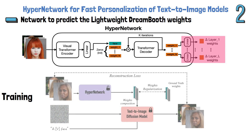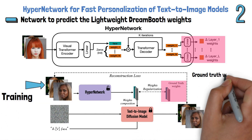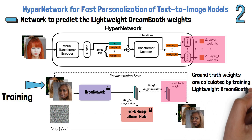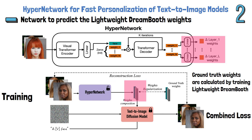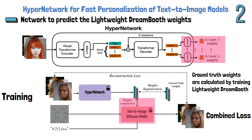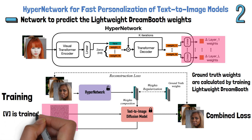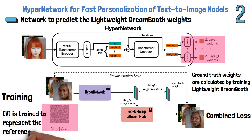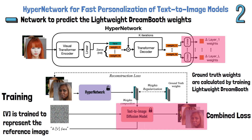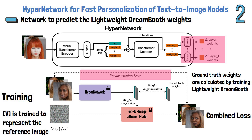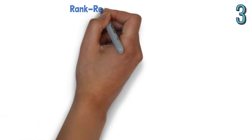But how is it trained? Here is another figure from the paper describing the training process. The training is done on a set of images. For each reference image a ground truth weight matrix is calculated by training a lightweight DreamBooth. In the training process they use a combined loss: they feed a reference image to the HyperNetwork, which yields the predicted weights. The first part of the combined loss compares the predicted weights to the ground truth weights. The predicted weights are then plugged into the text-to-image diffusion model — Stable Diffusion in the paper experiments — which is fed with noise and a prompt. Notice the special word in the prompt, V in square brackets, which is a rare word trained to represent a reference face image. Stable Diffusion then removes the noise based on the prompt using the plugged-in weights, and the second part of the loss is the reconstruction loss, where we expect to restore the reference image.